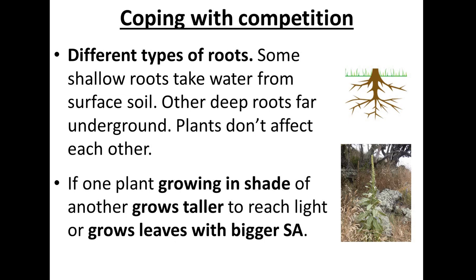If one plant grows in the shade of another, it may grow taller. Some types of plants wrap around taller trees in order to reach the top of the forest canopy. On the forest floor, plants could develop leaves with a larger surface area in order to maximize light absorption.